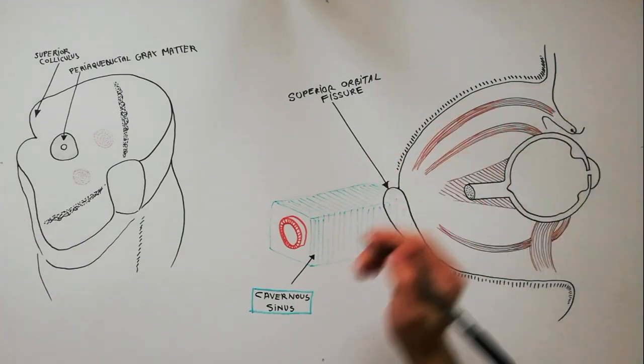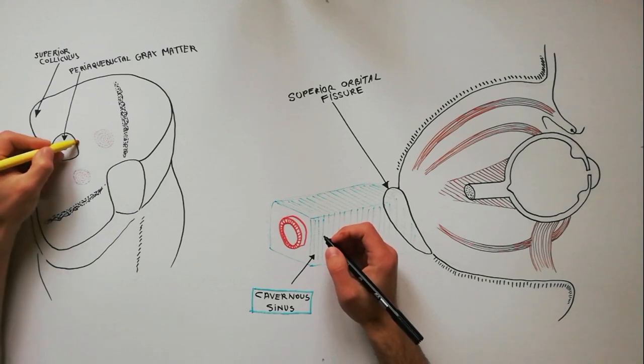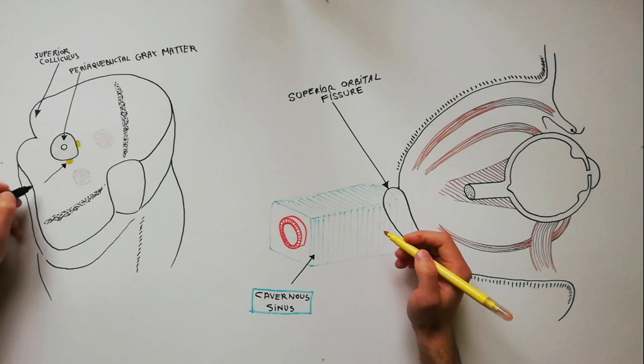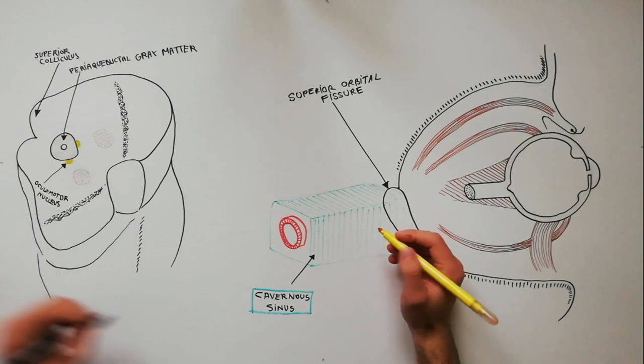The oculomotor nerve is the third cranial nerve and is purely motor. The oculomotor nerve originates from the oculomotor nucleus at the level of the superior colliculus in the midbrain. The oculomotor nucleus is located ventral to the periaqueductal gray matter.